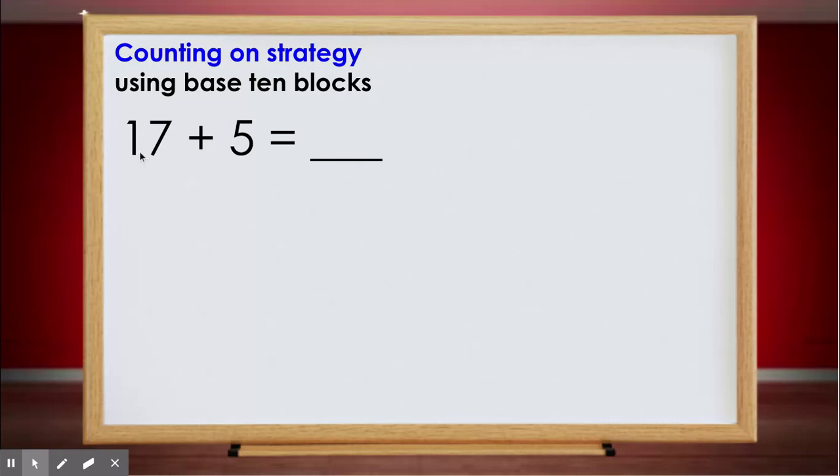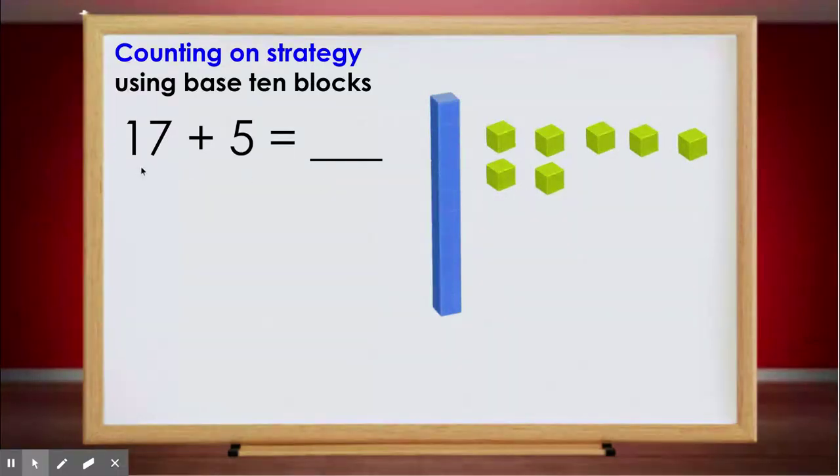For this one we're going to do 17 plus 5. I know 17 is my big number, so I'm going to start from 17. In the number 17 I see one 10 and seven ones, so I'm going to build one 10 and seven ones to show the number 17.